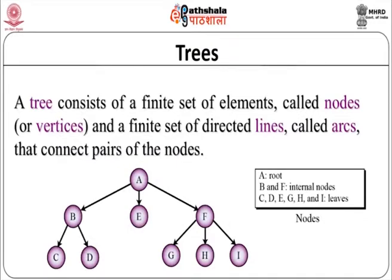Now let us look at some terminology. A tree consists of a finite set of elements. These elements are represented as nodes or vertices - normally in trees they are called nodes, not vertices. This is a terminology distinction. And a finite set of directed lines, which are called arcs, connect these pairs of nodes. For example, here A is a root.